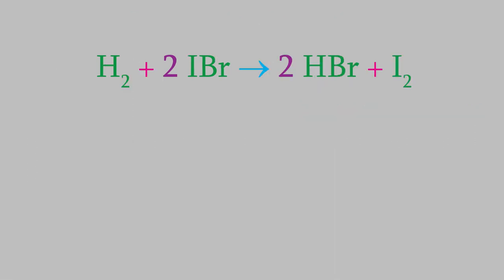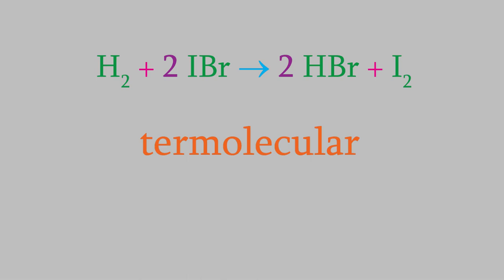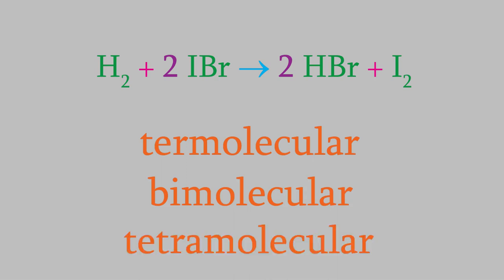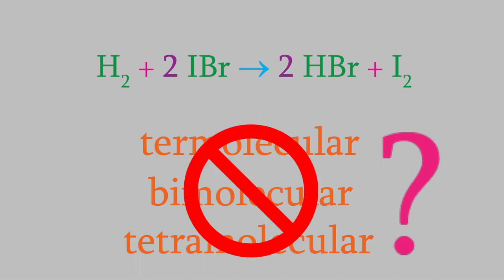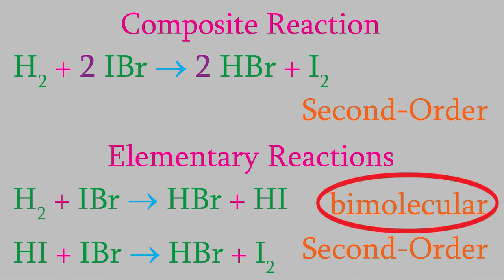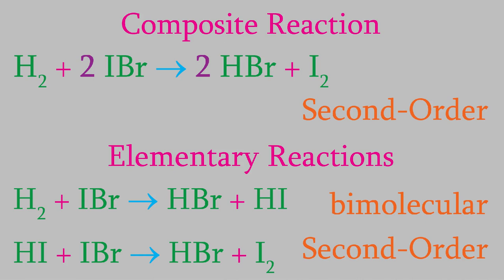But what about the molecularity? Is the overall reaction termolecular because three molecules are involved overall? Is it bimolecular because each of the elementary reactions is bimolecular? Or maybe it's tetramolecular because two molecules collide in the first elementary reaction and two more in the second one? Actually, none of those is correct. The molecularity of a reaction describes the number of molecules that must collide in a single reaction. But the overall reaction we have here isn't a single reaction - it takes place in two steps. For that reason, it makes no sense to talk about the molecularity of a composite reaction. A composite reaction doesn't have a molecularity, but the elementary reactions that make it up do. However, both the composite reaction and its elementary reactions do have reaction orders.